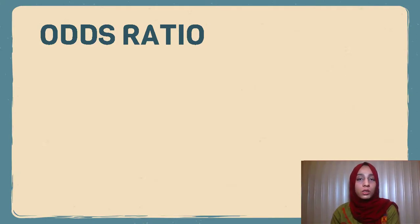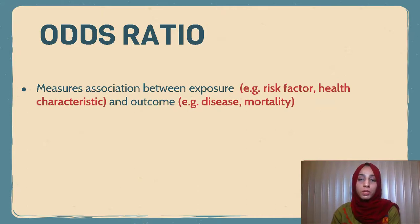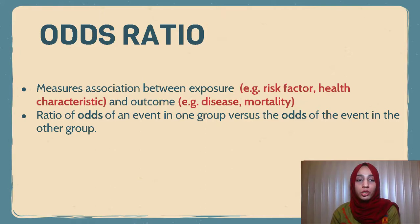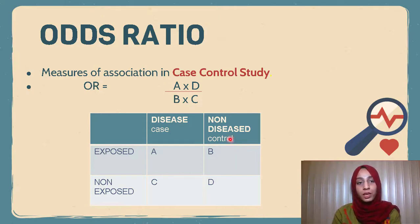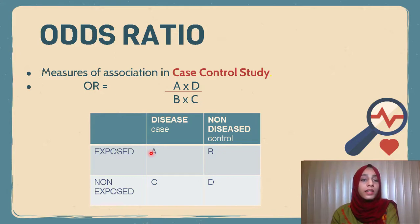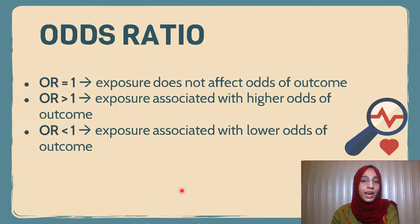What is an odds ratio? Like the others, it is a measure of association between exposure and outcome. It is a ratio of the odds of an event in one group versus the odds of the event in another group. In contrast to relative risk and attributable risk, odds ratio is the measure of association in a case control study, where we take two groups based on the outcome: one is the case and the other is control. We go back in time to measure the association of the disease with the risk factor. Using the 2x2 contingency table, we calculate odds ratio as A times D divided by B times C.